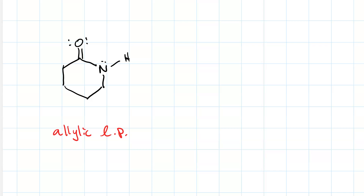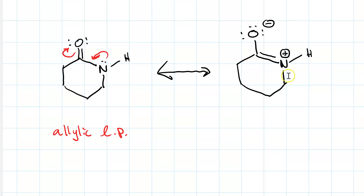If we had started with the allylic lone pair, we would have used two curved arrows and ended up with only two resonance structures total instead of three. We would have generated the resonance structure with the ammonium and the oxyanion, but we would have lost the one that has the neutral nitrogen, the carbocation, and the oxyanion. That's why you always want to use a minimum number of curved arrows for each step.